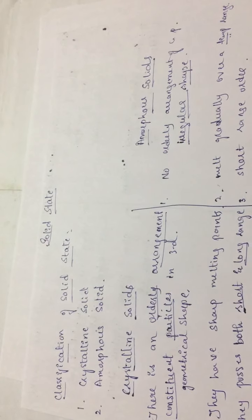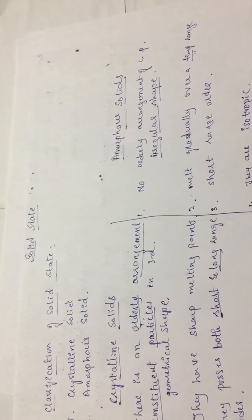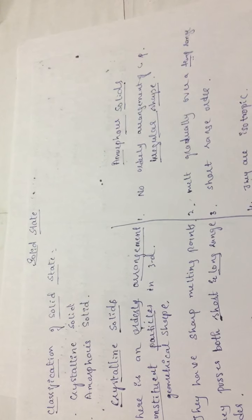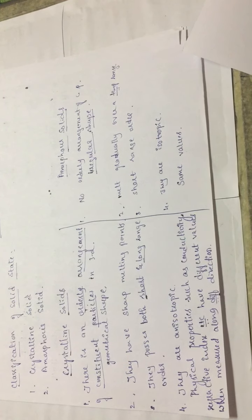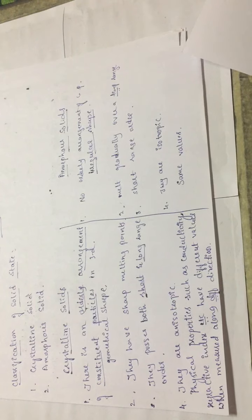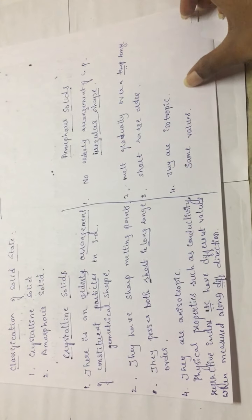To summarize: solid state is classified into crystalline and amorphous. Crystalline solids have orderly arrangement of constituent particles giving a geometrical shape; amorphous solids have no orderly arrangement giving irregular shape. Crystalline solids have sharp melting points; amorphous solids melt gradually over a temperature range. Crystalline solids possess both short and long range order; amorphous solids have only short range order. Crystalline solids are anisotropic; amorphous are isotropic. Cutting crystalline solids gives plain smooth surfaces; amorphous gives irregular surfaces. Crystalline solids are true solids; amorphous are pseudo solids or supercooled liquids.